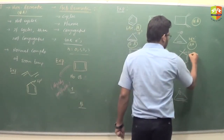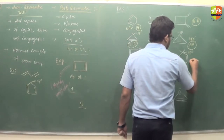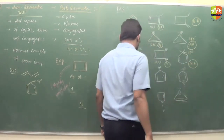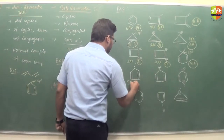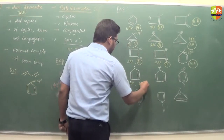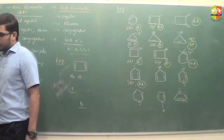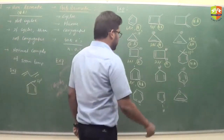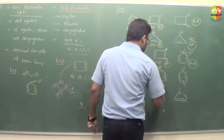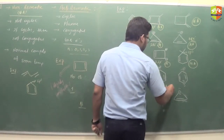This carbon atom is sp3 hybridized, so it is non-aromatic. This compound has 4 pi electrons — 2 plus 2 — so it is anti-aromatic. 4 pi electrons means it is anti-aromatic.